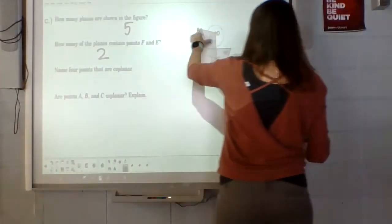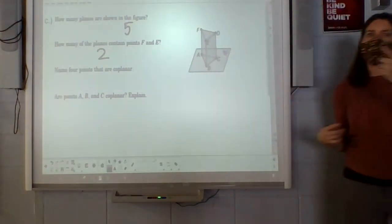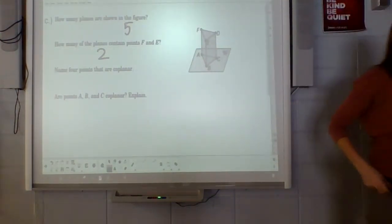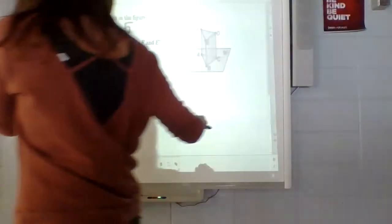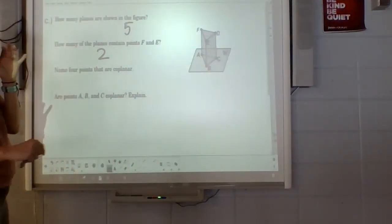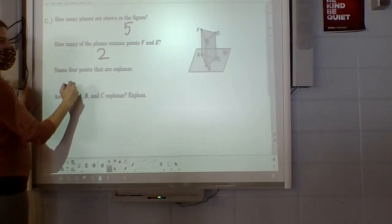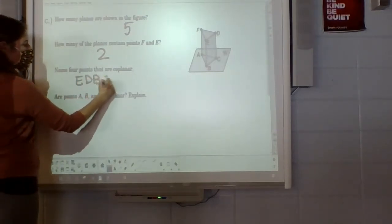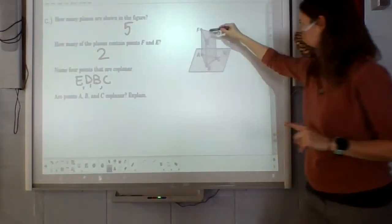All right, this next one has three separate answers you could have, so we only want one of them. Four points that are co-planar. Does anyone think they have four that are co-planar? Yeah, go ahead. Do you know what the names are? Just the four letters. E, D, C, and B. Okay, so E, D, C, and B. So he chose the points on this plane over here.